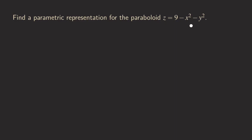We actually want to just parametrize the whole paraboloid, so this is quite easy to do. What we can do is simply let x be u and let y be v. So we can let x and y be our parameters so that we can find z and then have our parametrization.